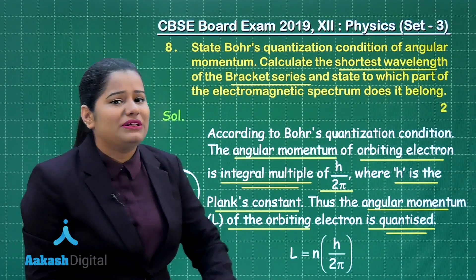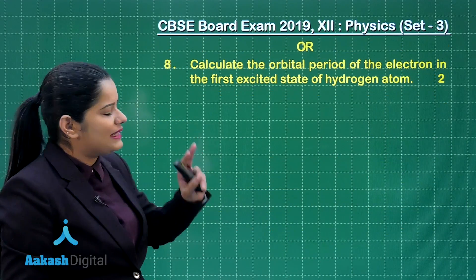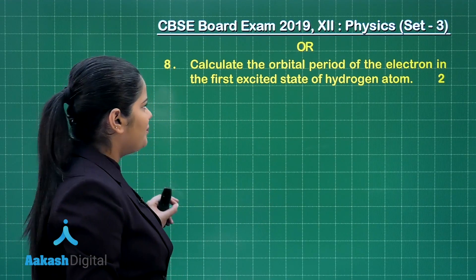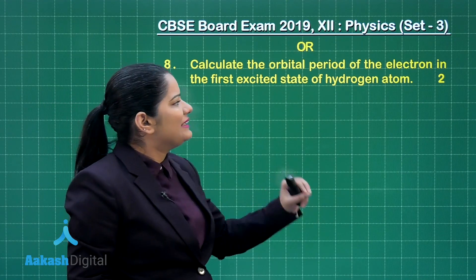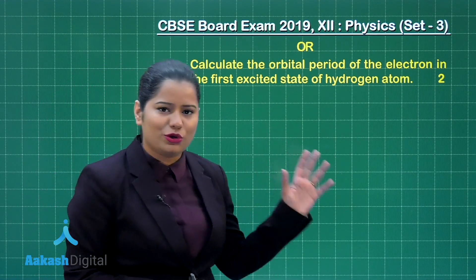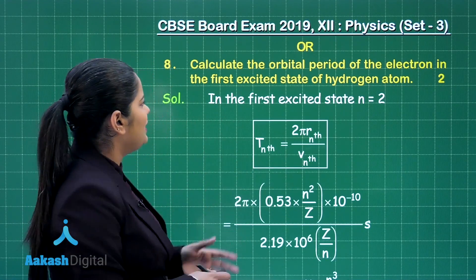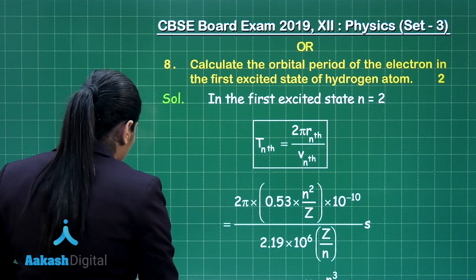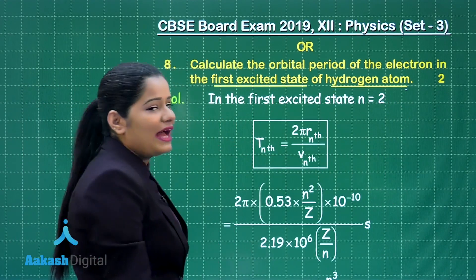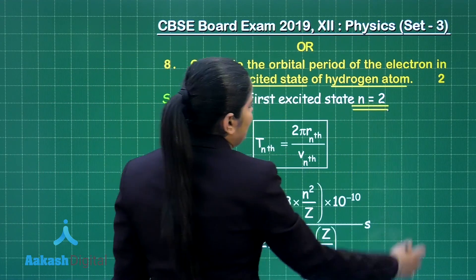Let us take up the second choice of this question. The second choice says: calculate the orbital period of the electron in the first excited state of hydrogen atom. For the first excited state of hydrogen atom, n will be 2.